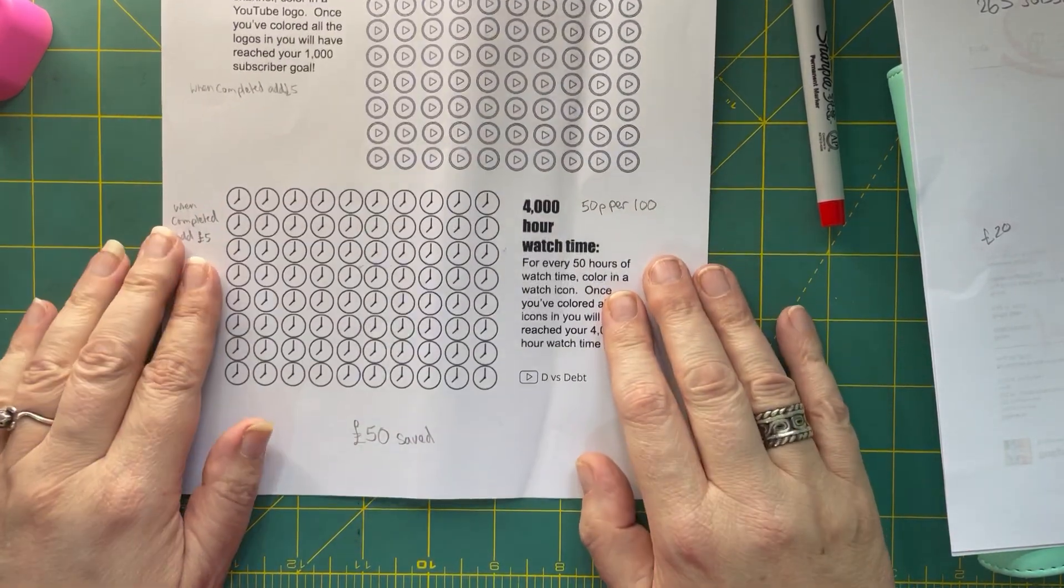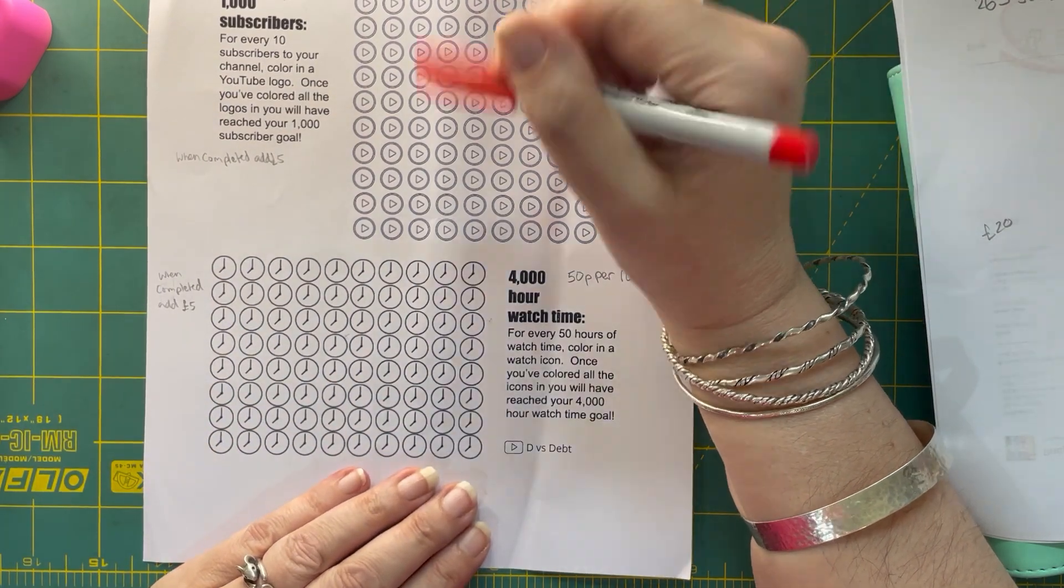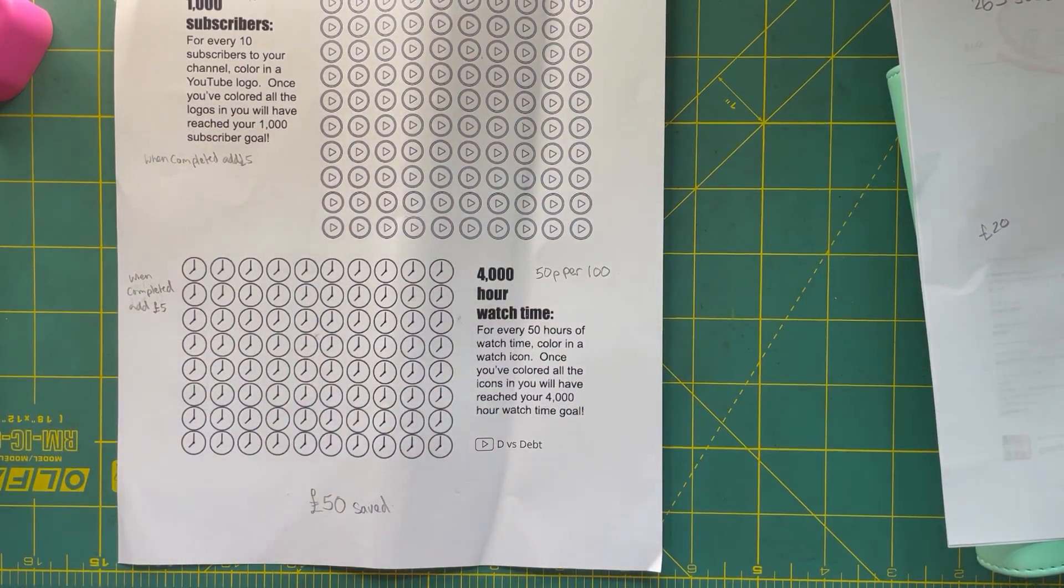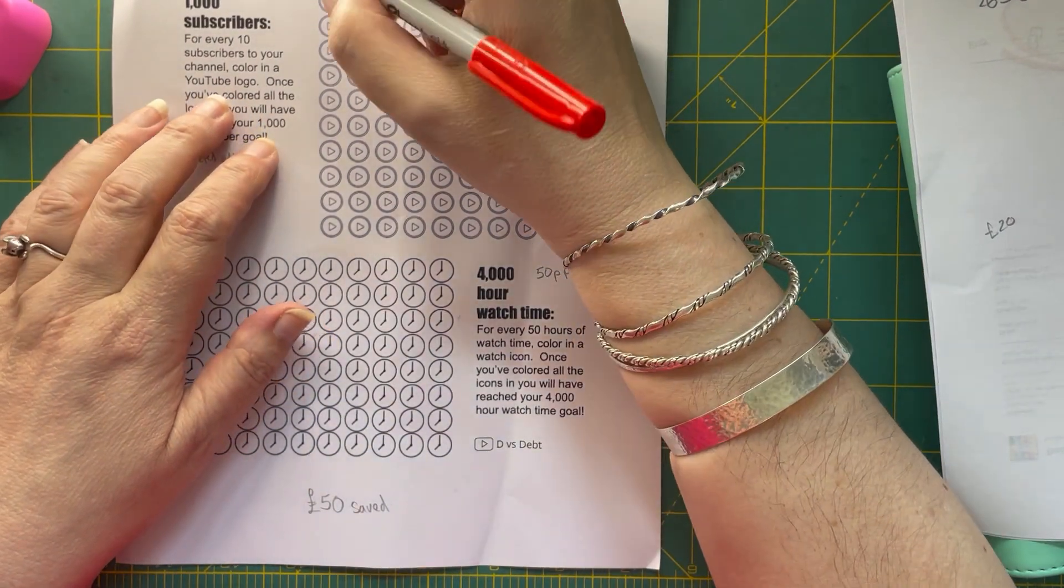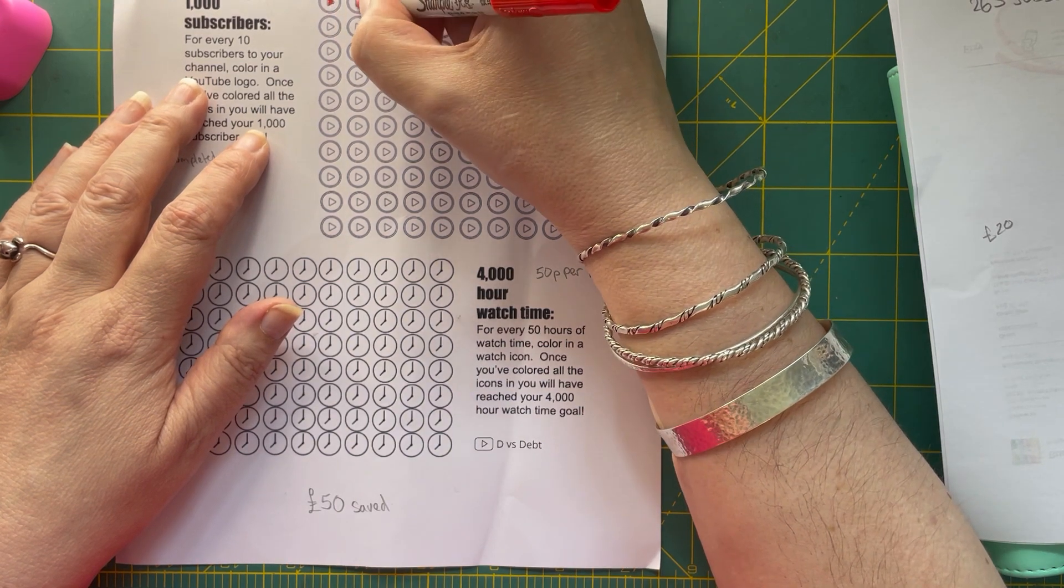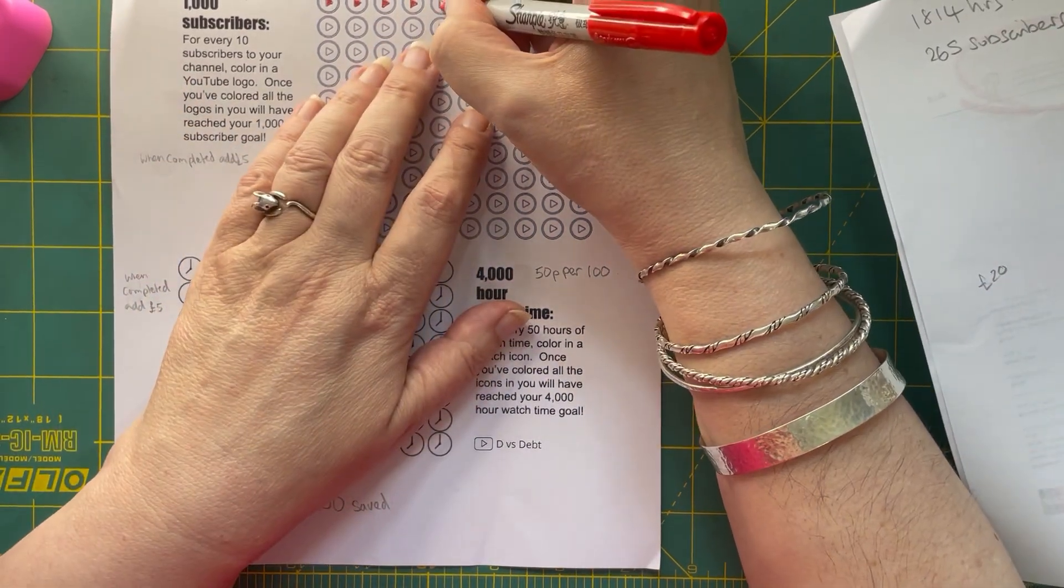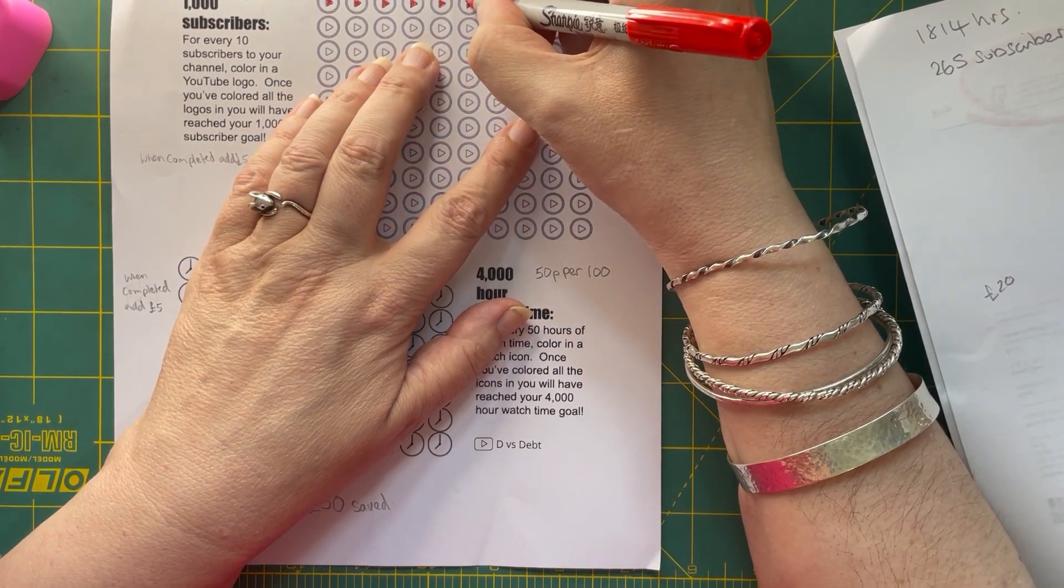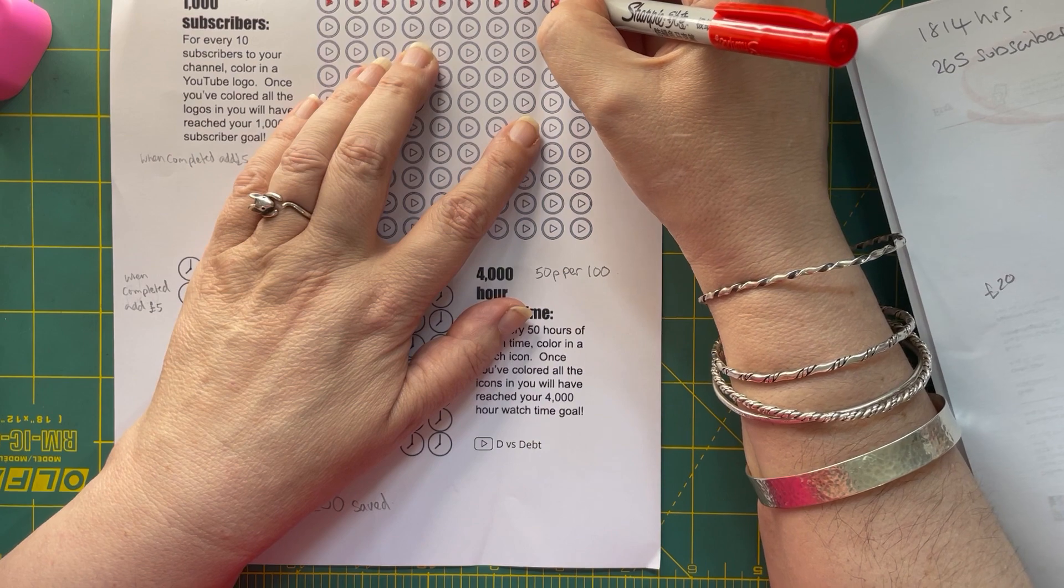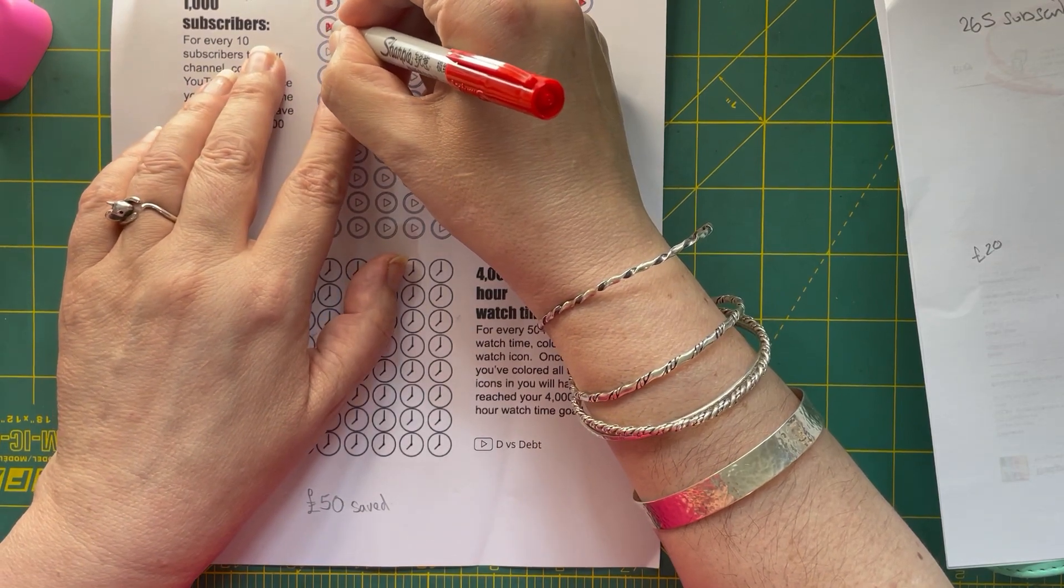I hope you can see all that. So we're going to start now. I've looked at my thing and my watch hours are quite high. My subscribers I definitely could do with more though. I have 265 subscribers as of today, so for every 10 subscribers we're going to color them in.